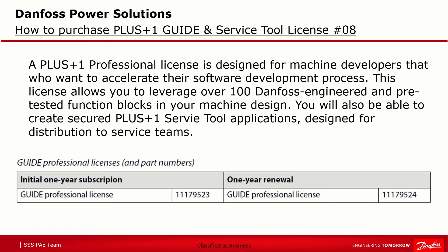Step three: purchase PLUS1 Guide Professional license. At the end, there is no way around acquiring the professional license, which offers over a hundred Danfoss-engineered and pre-tested function blocks and the ability to create PLUS1 Service Tool applications. It also enables additional tools and libraries to speed up the software development process. The Guide Professional license can be ordered through your local Danfoss sales representative or on request via the Danfoss webpage. There are two Guide Professional licenses available — one for initial and one for renewal, both with a one-year subscription. The initial license is used only once, the very first time you order the Guide Professional license. When your License Manager does not show a professional license, the initial part number is the correct one to order.